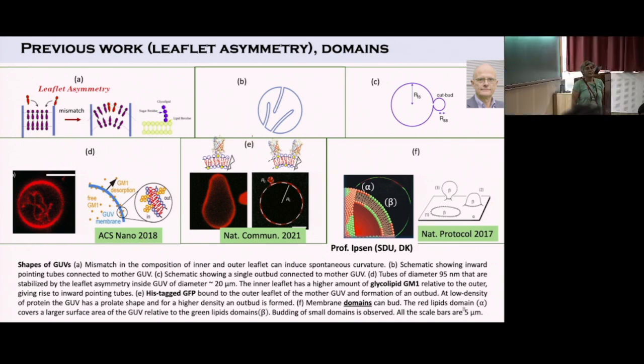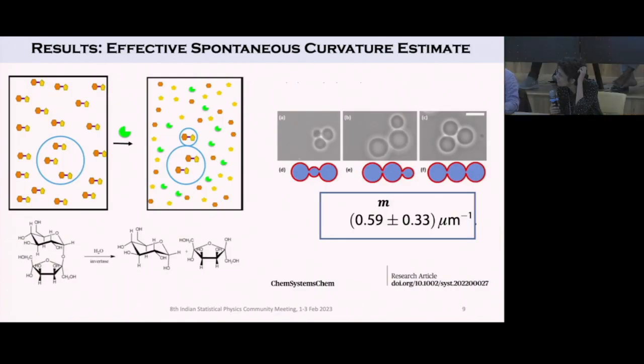This value of M that you showed, the error bar is huge, I mean it's almost half the mean value. Is that what generally happens in these systems?